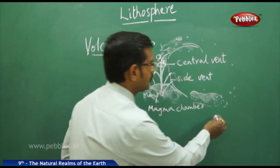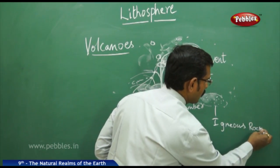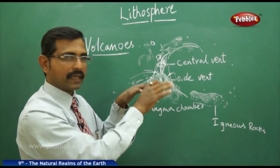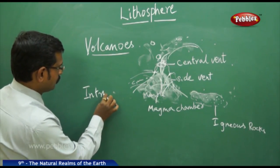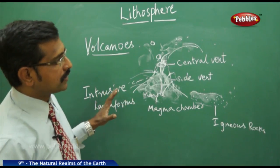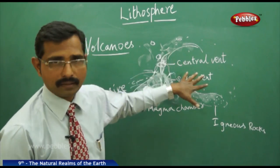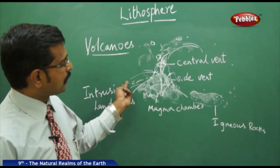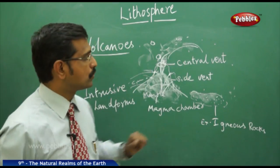These rocks formed from cooling lava are called igneous rocks — the first formed, or primary, rocks. Sometimes what happens is that magma inside the volcano cools down due to pressure and temperature without ever coming out, becoming rocky material inside. These kinds of landforms we call intrusive landforms — magma solidifying inside without reaching any side vent or central vent. When magma comes out and becomes rock material, like igneous rocks, those are called extrusive landforms.